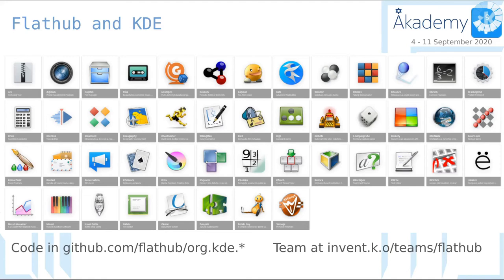Flathub and KDE — we have all those apps in Flathub. There's quite a few. There's simple ones like a few games, and complex ones like Digikam, GCompris, Okular — that's kind of complicated. Krita is also there. The code for these apps lives in GitHub. Everything from Flathub is on GitHub, at github.com/flathub/the-manifest-name — so org.kde.okular, for example. We have a team in Invent we use to discuss things, and you're welcome to join there.